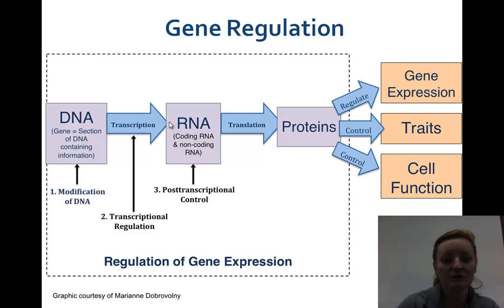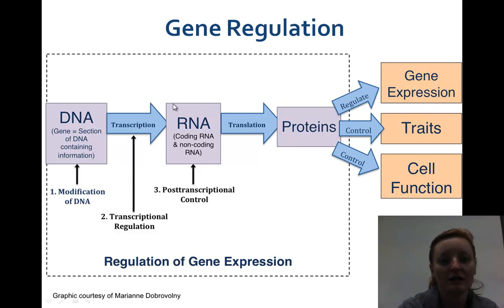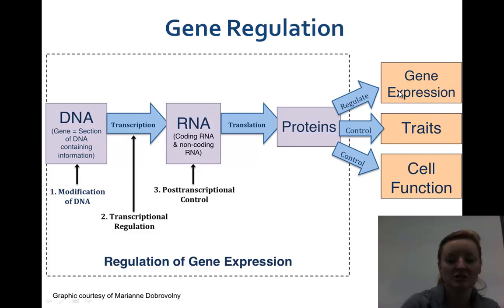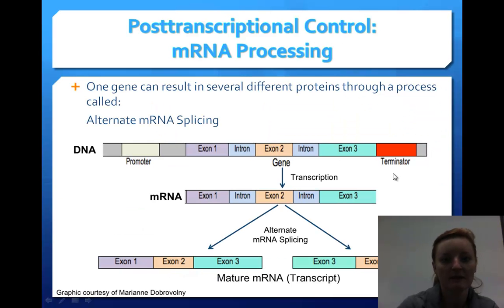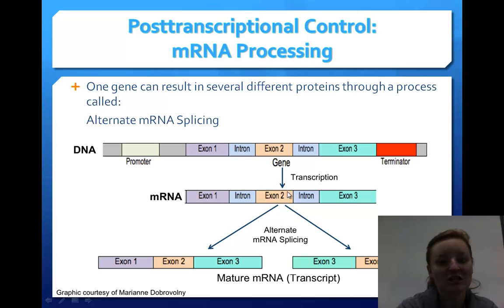Next we have post-transcriptional control. We have RNA which, after transcription, we can modify to see what kind of proteins we get. If we change the proteins, that changes gene expression, our traits, and cell function. With post-transcriptional control we already have the mRNA, and now we're changing the mRNA.